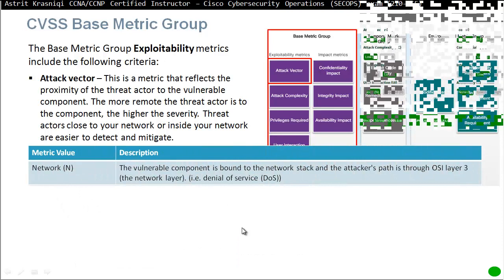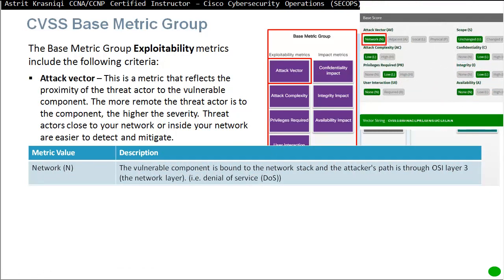In the CVSS calculator, the first attack vector option is Network: the vulnerable component is bound to the network stack and the attacker path is through OSI layer three — the network layer. For example, the attacker is far away and has to go through routers to reach the component, so it's not on the same subnet and could be from a remote location. The second is Adjacent: the vulnerable component is bound to the network stack, but the attack is limited to the same shared physical or logical network and cannot be performed across an OSI layer three boundary.